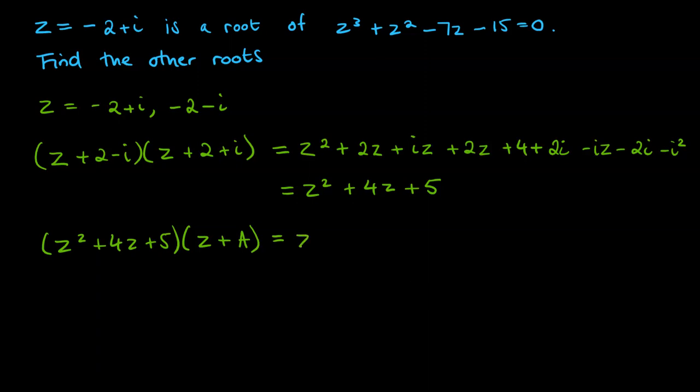And compare it to z cubed plus z squared minus 7z minus 15. Now, I should have really had a blank space in front of this z here as well because it could have had a coefficient there. But just comparing it with the z cubed here, z squared would have to be multiplied by a singular z here to make the z cubed.